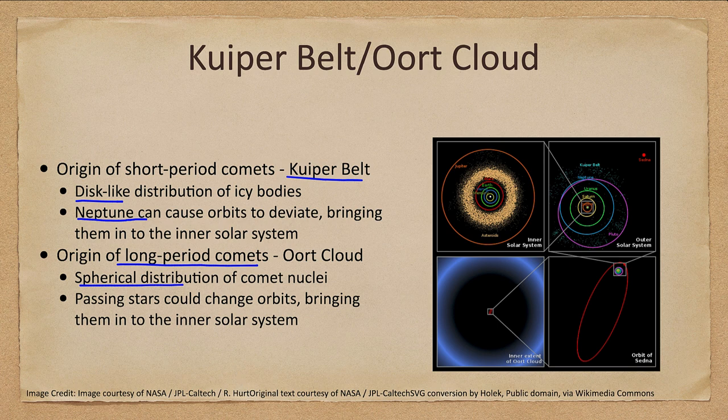This explains the distribution: since Kuiper Belt objects are already in a disk orbiting like the planets, they continue to orbit in that same direction. The random spherical Oort Cloud produces comets that can come in from any direction — at high angles, or even orbiting backwards relative to the rest of the solar system.